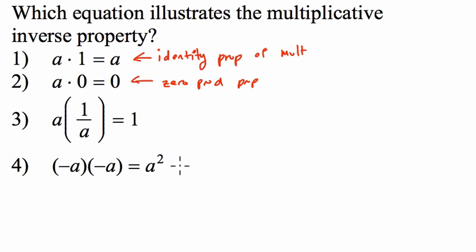We're going to turn to choice four. I'm actually not sure what the name of this property would be. I guess what we're doing here is just multiplying negative a by negative a. That's the same as negative one times a times negative one times a.